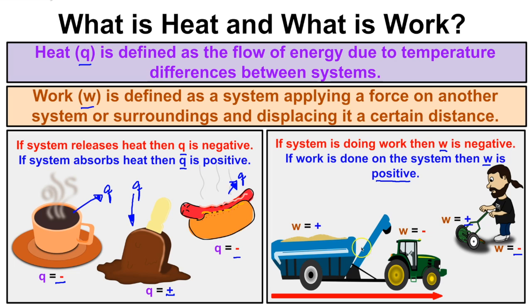The tractor is doing work on the trailer as it pulls it, so if the tractor is the system, w is negative. If the trailer is the system, work is being done on it by the surroundings — the tractor — so w is positive. Understanding whether heat is leaving or entering the system, and whether work is done by or on the system, is key.